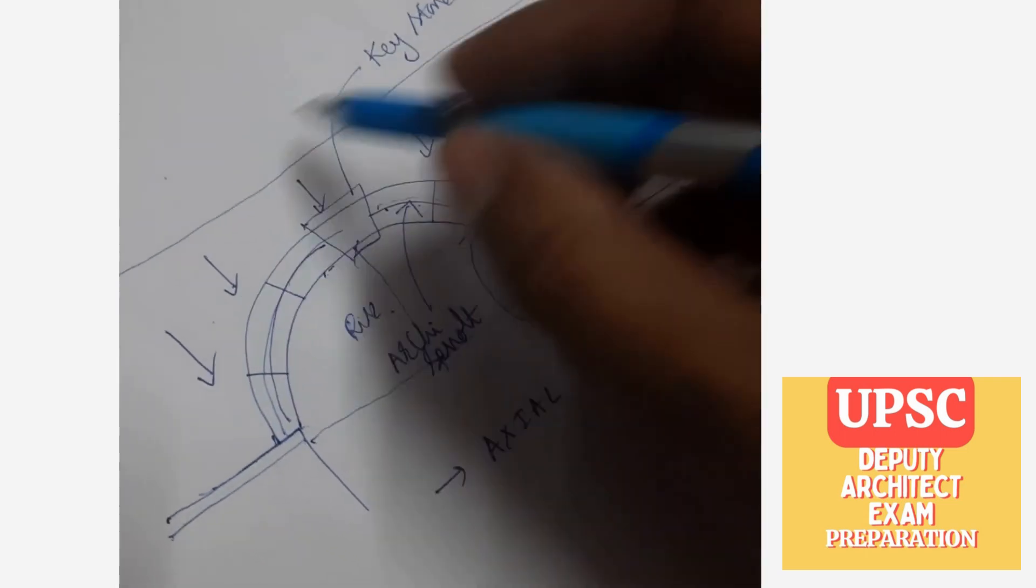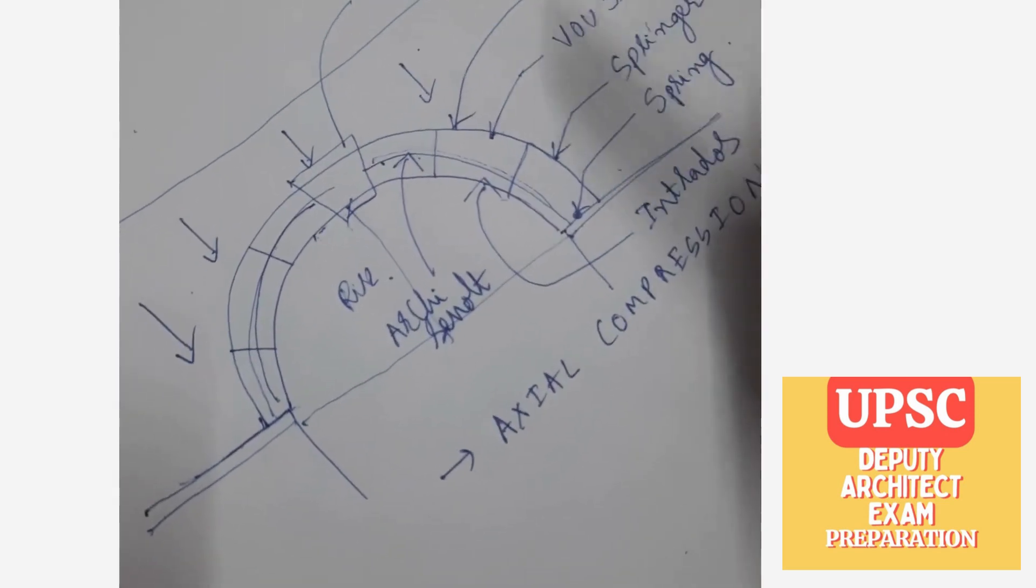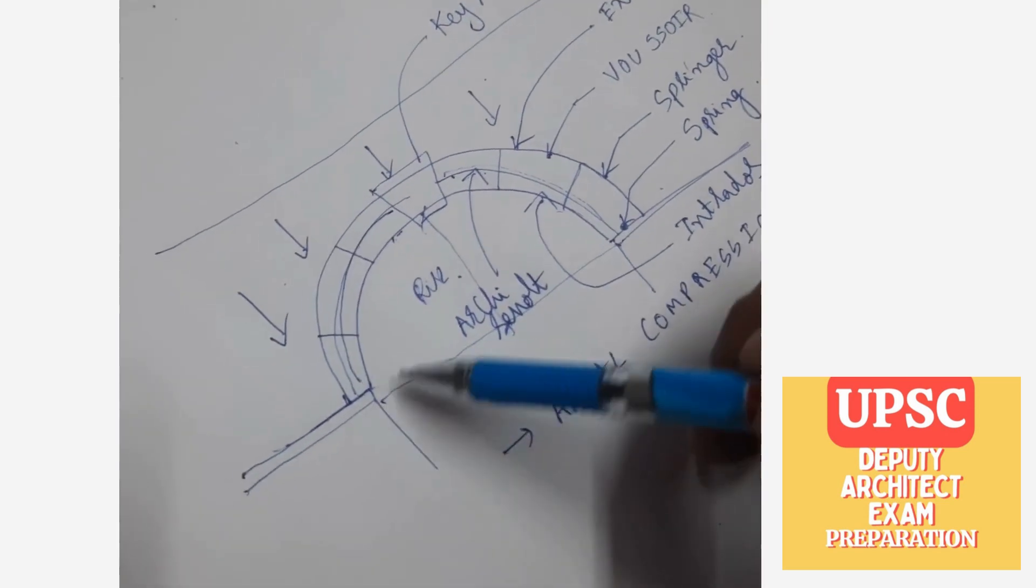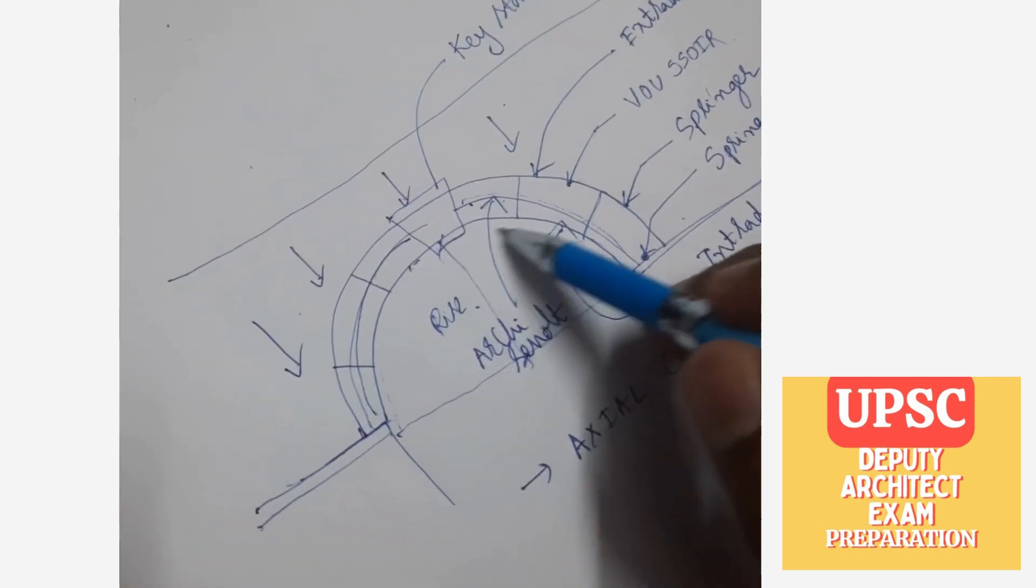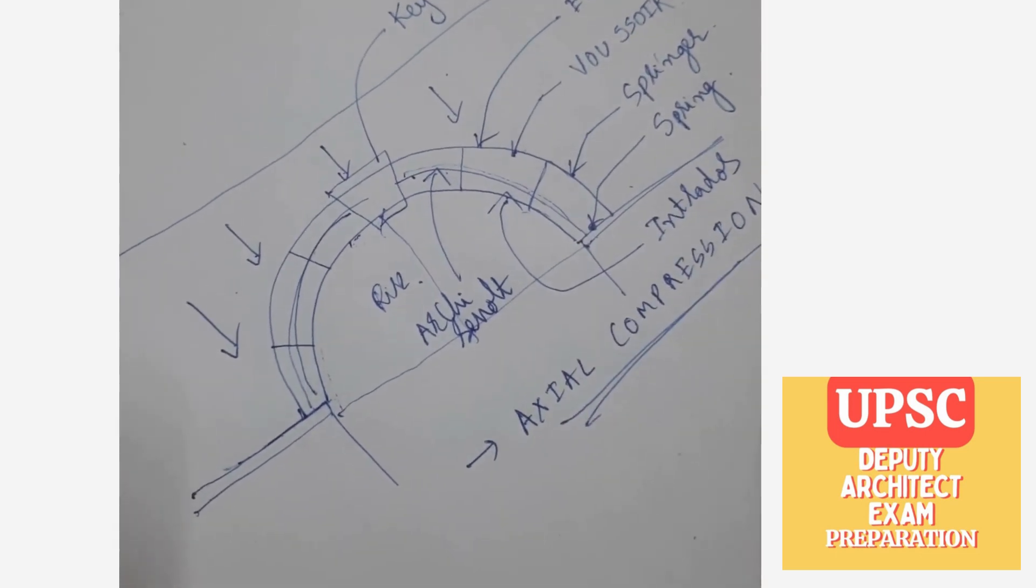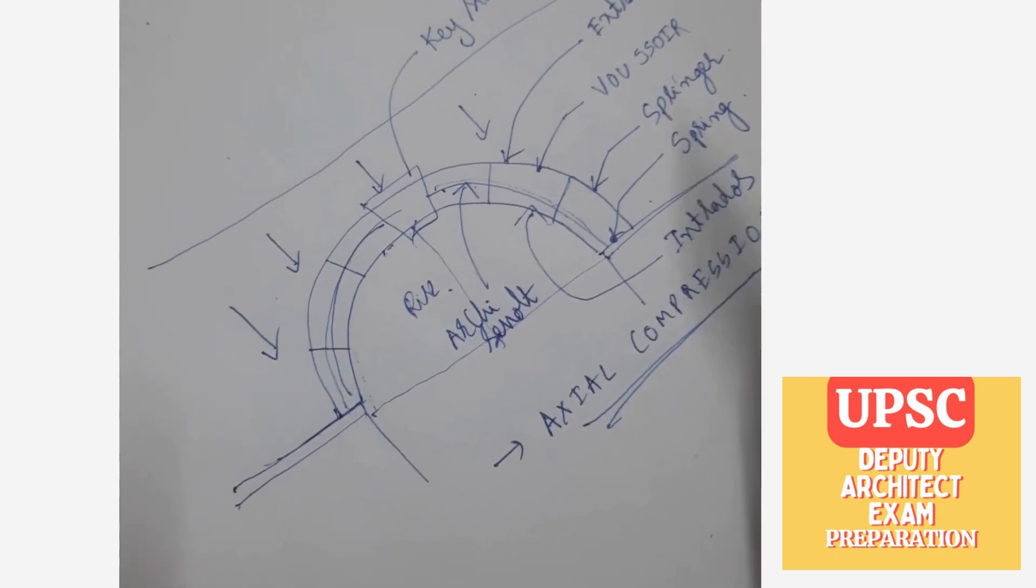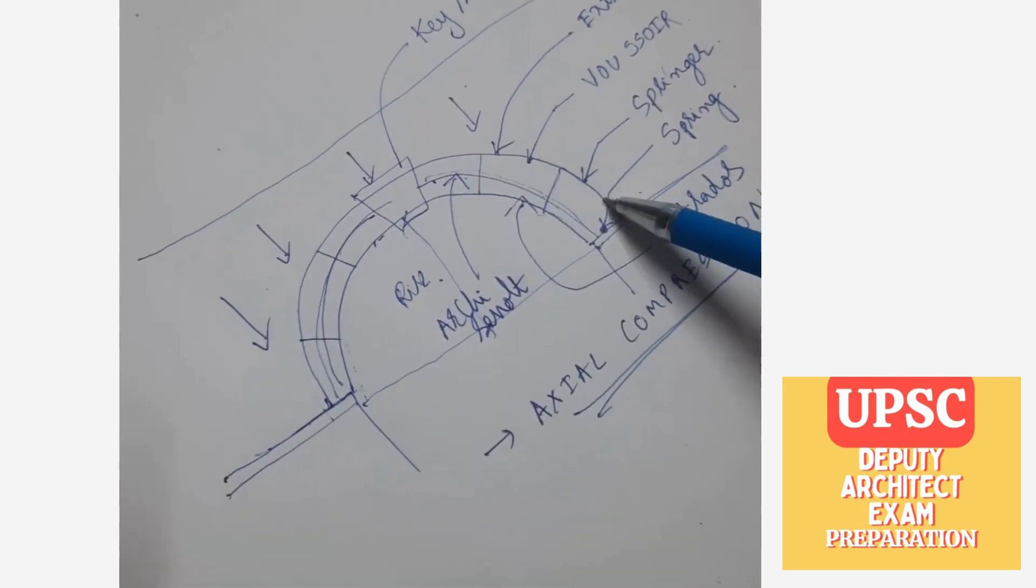So these are the main important things in the arch. Once again I will revise. First one is mainly, what arch will do is arch will support the vertical forces through axial compression. Second one is whatever the outside surface is called extrados, inside surface of the arch is called intrados. All the wedges are locked by a center stone, it's called keystone.